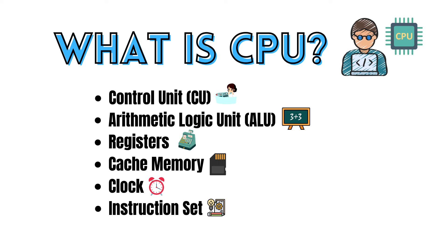The performance of a CPU is a critical factor in determining the overall speed and efficiency of a computer system. Advances in CPU technology have led to the development of multicore processors, which contain multiple processing units on a single chip, further enhancing computing power.